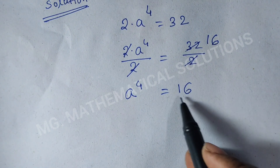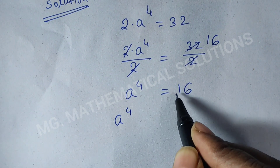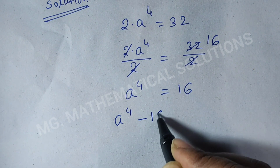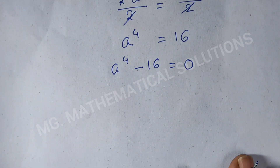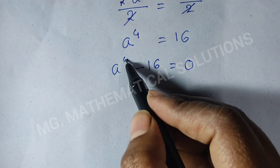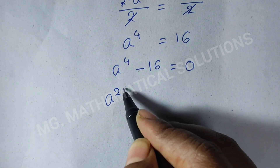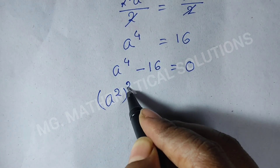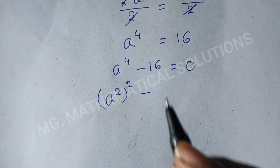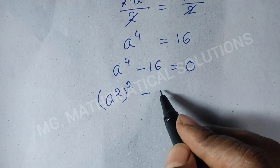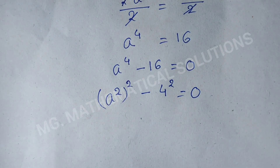Now we bring everything to the left side. So, a to the power 4 minus 16 equals 0. We can write a to the power 4 as (a squared) squared, and 16 as 4 squared, giving us (a squared) squared minus 4 squared equals 0.